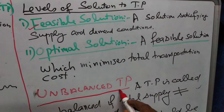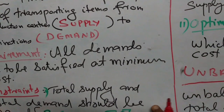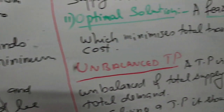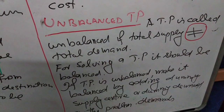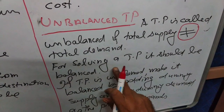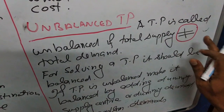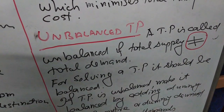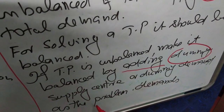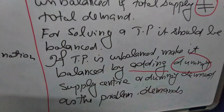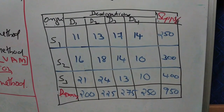There is a special case of transportation problem, that is unbalanced. A problem should be a balanced one when demand is equal to supply. When demand and supply are not equal, it is called unbalanced. For solving a transportation problem, it should be balanced — the total demand should be equal, or it is to be adjusted by adding a dummy supply center or dummy demand as the problem demands.